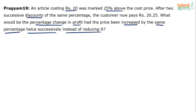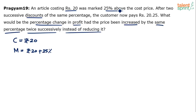Let's work on it. Cost price is equal to Rs.20. Marked price will be 20 plus 25% of 20. Because it was marked 25% above the cost price. 25% of 20 is 5. So 20 plus 5 equals 25. The marked price is Rs.25.